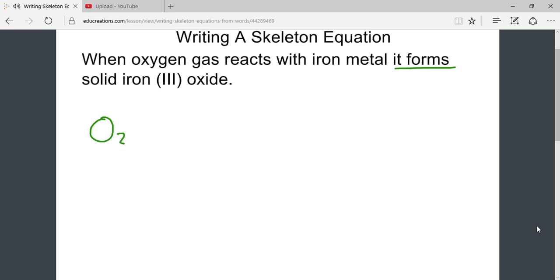Since it says that oxygen gas reacts with iron metal, we need the symbols for iron. We can add the information that oxygen is a gas and iron is typically a solid. We now have the symbols for our reactants.